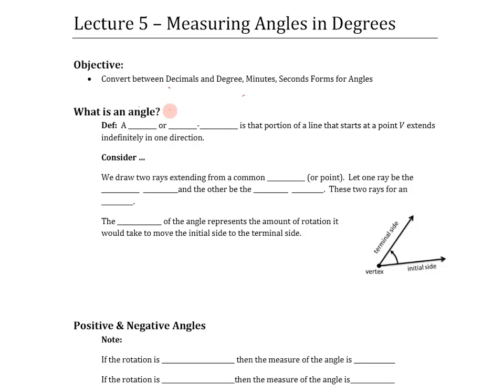So to begin with, let's talk about what is an angle. First of all, a ray or a half line is that portion of a line that starts at a point V and then extends indefinitely in one direction. If we take two rays that share a common vertex, we're going to let one ray be the initial side and one ray be the terminal. These two rays form an angle.